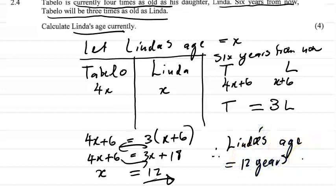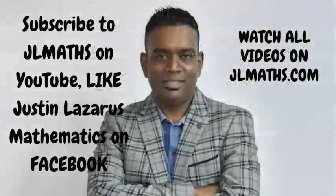The important thing is understanding equations — the left-hand side must equal the right-hand side. Let the smaller quantity equal to x, then formulate your equation to solve. These are the takeaways from today's lesson. If you haven't subscribed already, don't forget to subscribe to JL Maths. You can like my Facebook page, Justin Lazarus Mathematics, and watch all videos on my website, jlmaths.com. I'll catch you in the next video.